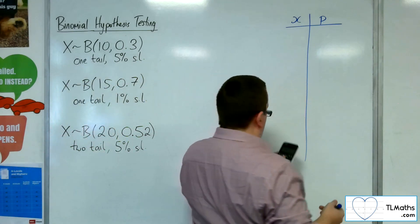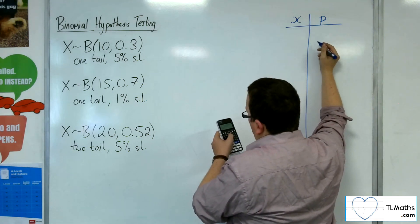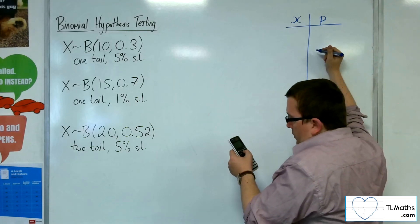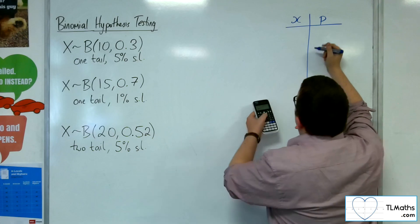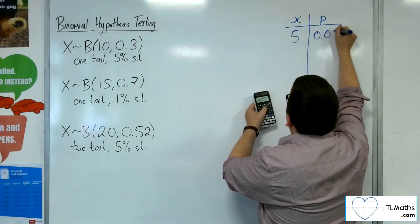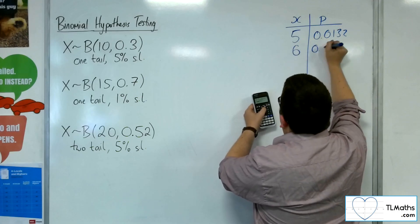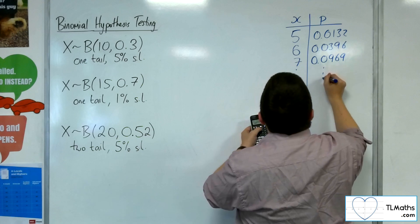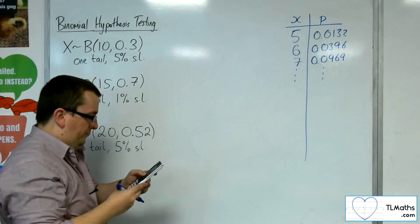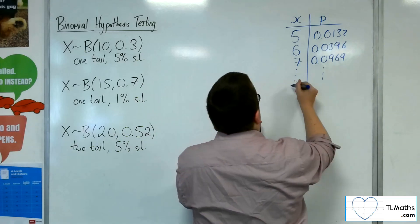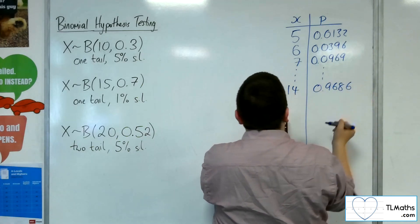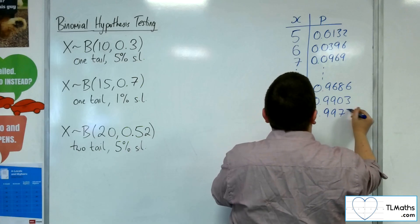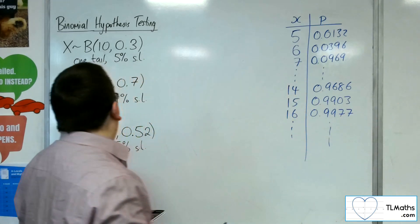With n = 20 and probability 0.52, scrolling through the results: P(X ≤ 0) ≈ 4.2 × 10⁻⁷, P(X ≤ 5) = 0.0132, P(X ≤ 6) = 0.0396, P(X ≤ 7) = 0.0969, then continuing up to P(X ≤ 14) = 0.9686, P(X ≤ 15) = 0.9903, P(X ≤ 16) = 0.9977, and the values continue up to 20.